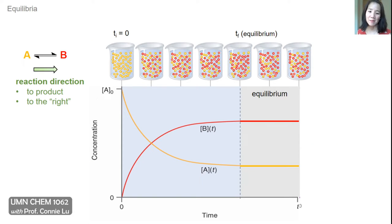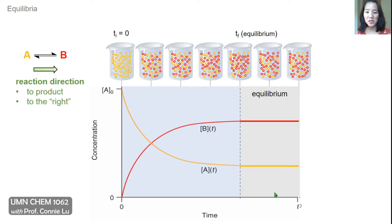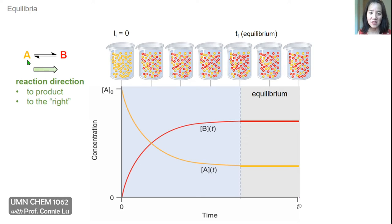Reaction direction is an important concept in chemical equilibria. In this example where A turns into B, at time zero we start with all A. As time passes and B is formed, we reach the point where the net concentrations of A and B level out and become constant — the last three beakers represent the reaction at equilibrium. This reaction does not attain 100% conversion; there's still A remaining. We say the reaction proceeds from A to B, to product, or to the right.